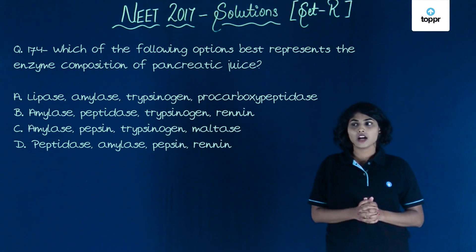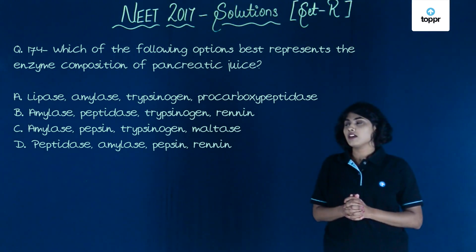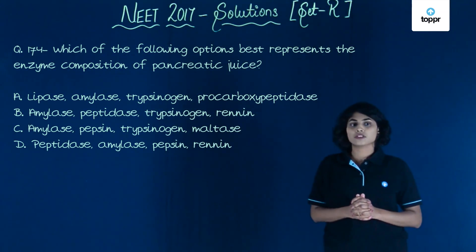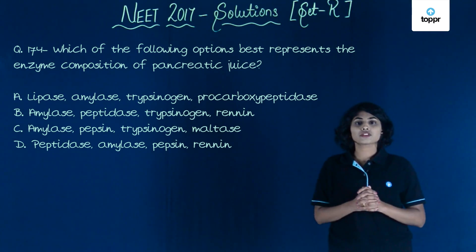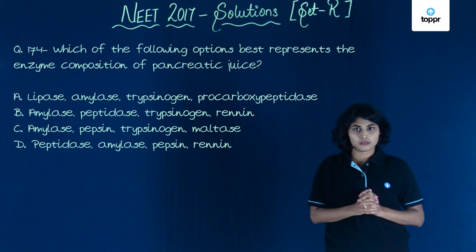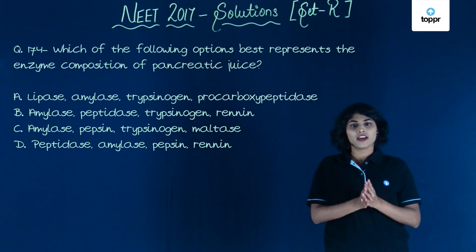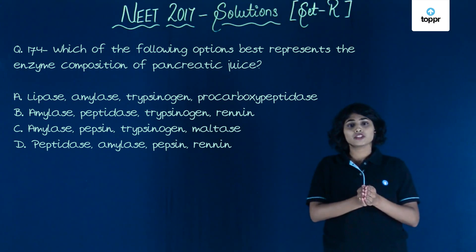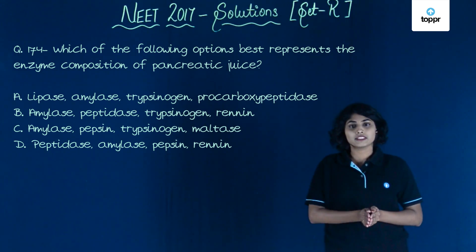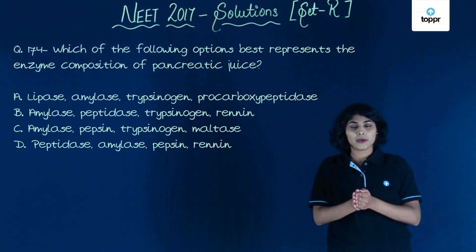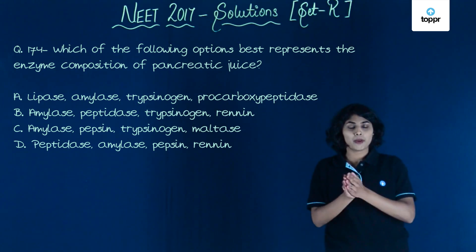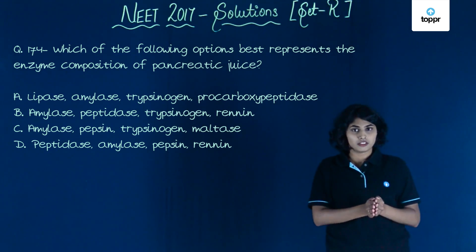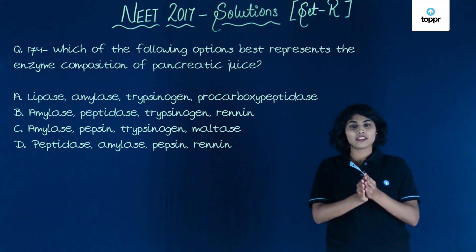In this question, we are asked to find the best option which represents the composition of pancreatic juice. We know that pancreatic juice does not contain pepsin or renin. So, we can eliminate the options which have pepsin and renin in them.